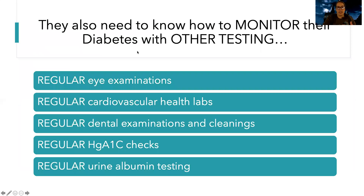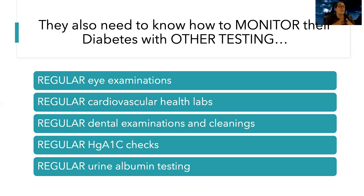Patients also need to know about other monitoring and testing for their diabetes. They'll need regular eye examinations to look for diabetic retinopathy, cataracts, glaucoma, and other conditions they're at higher risk for. They'll need regular cardiovascular health labs like a lipid panel and regular blood pressure checks for hypertension. Remember, diabetes and heart disease are really closely linked, so we always need to keep an eye on cardiovascular health. Regular dental checks and cleanings are also needed, as diabetic patients are at high risk for dental complications, which also relates to heart health.